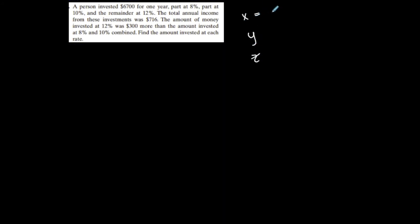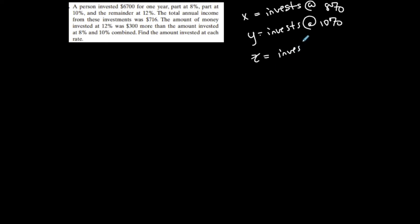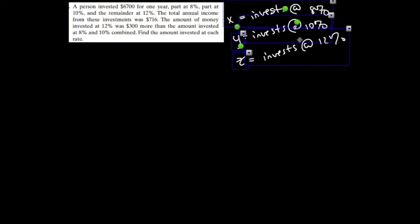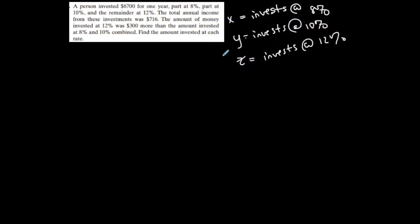It always sounds worse than it is. Now for an important question — people like money, so we'll deal with a little money. A person invests $6,700 for one year: part at 8%, part at 10%, and the remainder at 12%. I see three unknowns: x is the amount invested at 8%, y is the amount invested at 10%, and z is the amount invested at 12%. I'm defining my variables first, then I'll write my equations.